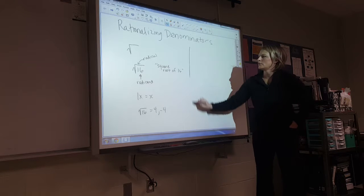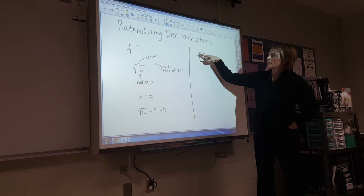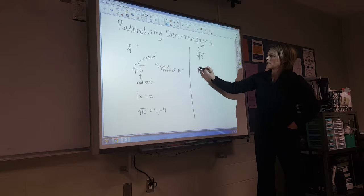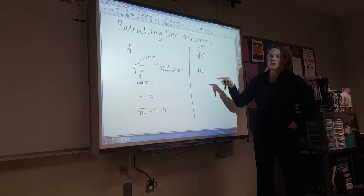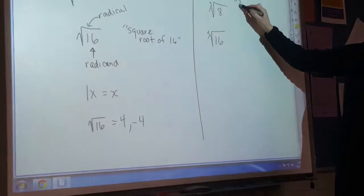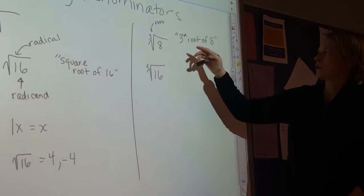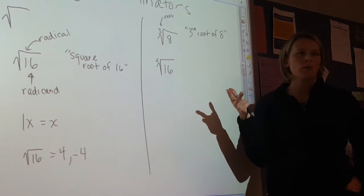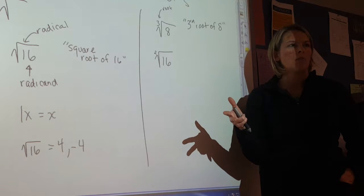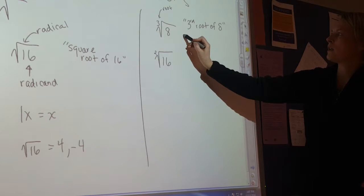You also might have a little number right there, and that's called the root. So technically I could write this as the second root, or the square root, of 16. This one would be the third root of 8. When you're looking for the third root, you want to know what times what times what — something multiplied by itself three times. 2 times 2 is 4, times 2 is 8, so this equals 2.